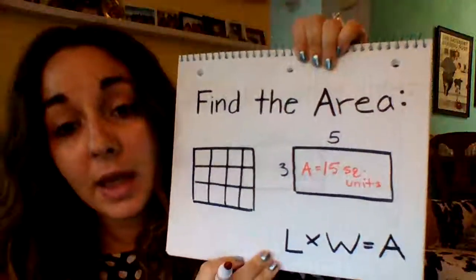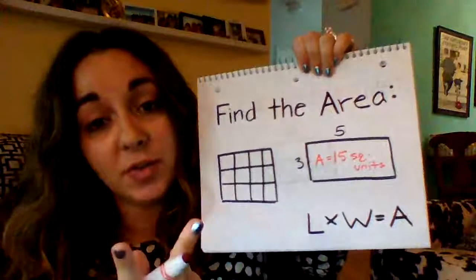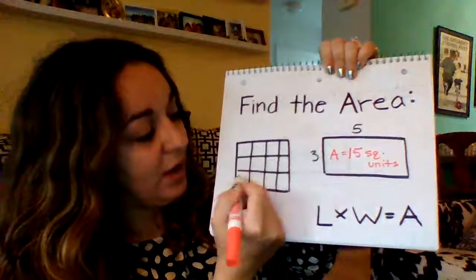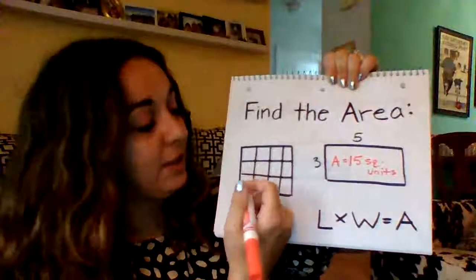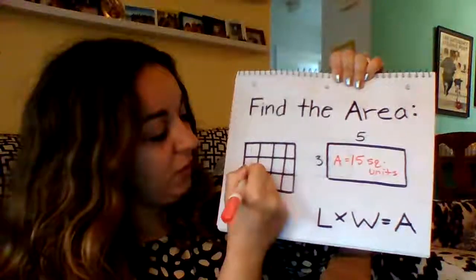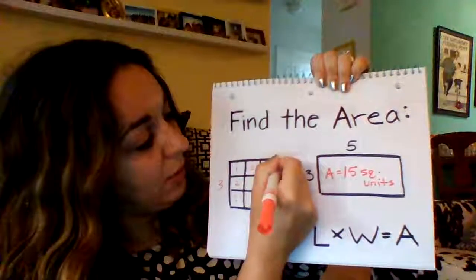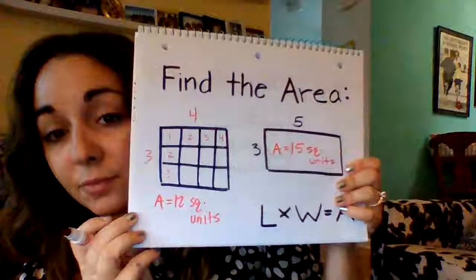Now, when you see a shape like this and want to find the area, there are two different ways. You could just count the squares: 1, 2, 3, 4, 5, 6, 7, 8, 9, 10, 11, 12 — the area is 12 square units. Or you can multiply the length times the width: 3 times 4 equals 12. So we know the area of this shape is 12 square units.